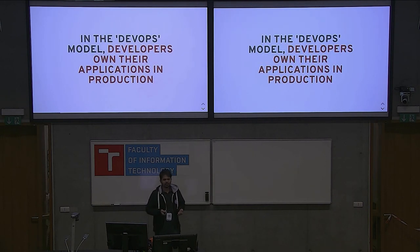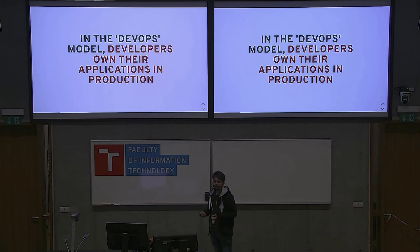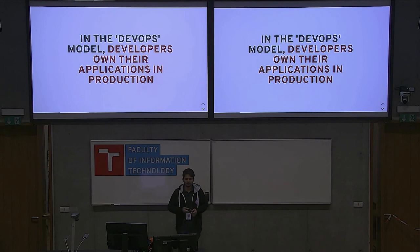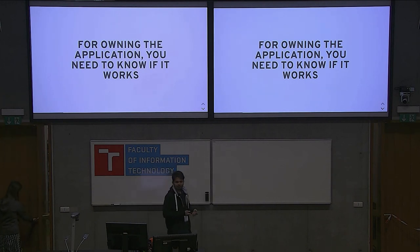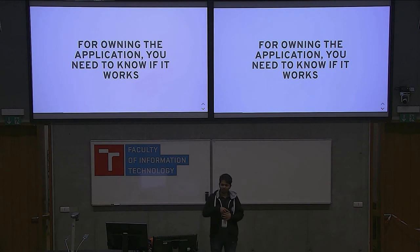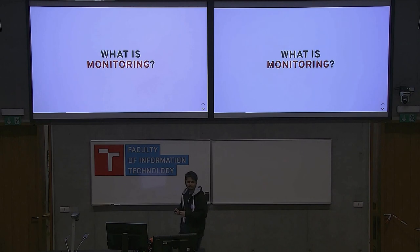In the DevOps model, developers own their applications in production. And if you have had any experience of owning your application in production, you know what an on-call means — you know how you get paged in the middle of the night and then you have no clue what to do. We'll talk about fixing that. For owning the application, you need to know how it works and if it works, and when it does not work, what is making the application fail. And that brings us to monitoring.